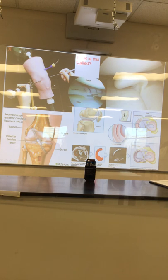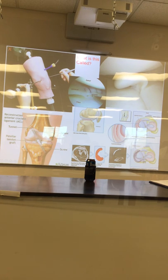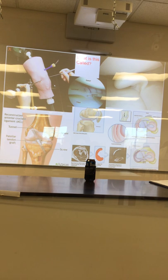For an ACL repair, we go in and harvest a piece of ligament or tendon from somewhere else in the body — sometimes a piece of patellar ligament. We can do this from a variety of places. I'm surprised we don't use polymers more at this stage.